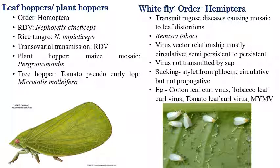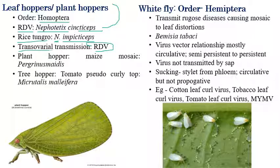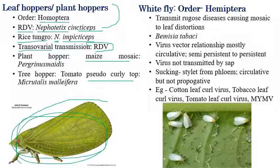Planthoppers also act as vectors in transmitting plant viral diseases and come under the order Homoptera. Rice dwarf virus is transmitted by Nephotettix cinticeps (a leafhopper), and rice ragged stunt virus is transmitted by Nephotettix impicticeps. Transovarial transmission can be observed in rice dwarf virus. Maize mosaic virus is transmitted by planthoppers, and tomato pseudo curly top virus is also transmitted by planthoppers.